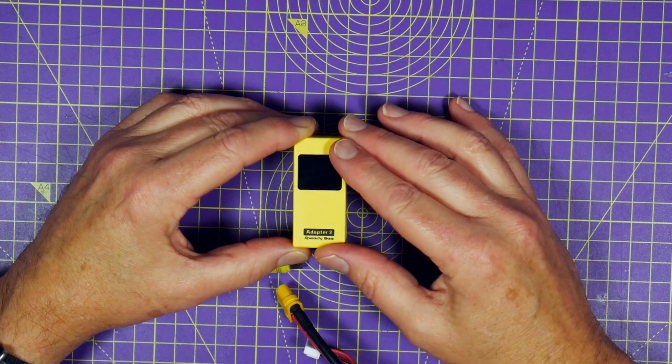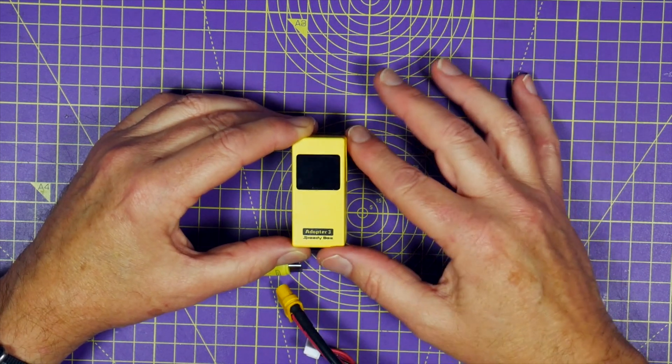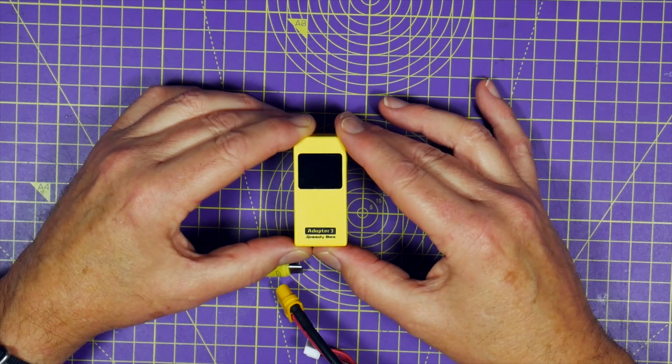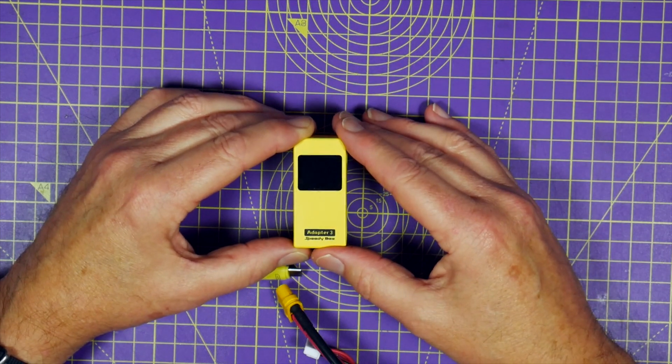And this uses a Bluetooth connection on the app to do all your configurator changes and Wi-Fi to access your blackbox logs, firmware flashing and BLHeli changes.